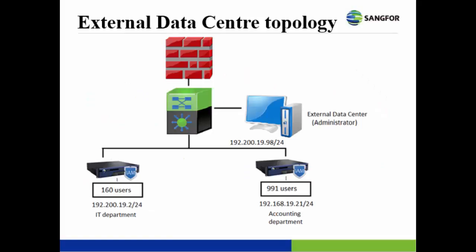This is an example of a network topology where external data center can be applied. An IM belonging to the IT department has a network address of 192.200.19.2/24, and an IM belonging to the accounting department has address 192.168.19.21/24. Both IMs have a large number of users, so logs will eventually occupy storage space. We recommend having a prepared PC acting as an external data center with the IP address of 192.200.19.98, and both IM logs from the IT department and accounting department will be synchronized to it.